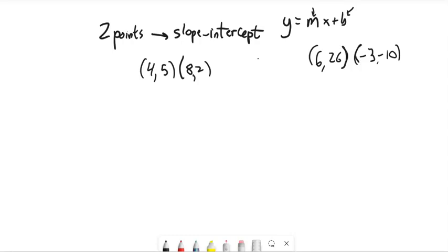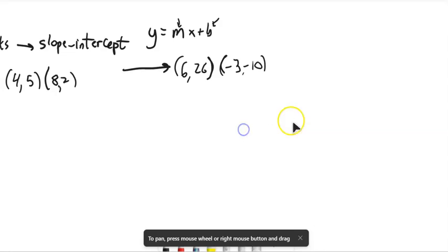So for these two points, I'll start with these two points right here, I'm going to need to know the slope, and then I'll figure out where the y-intercept is at. So the slope, as we know, is change in y over change in x. It's a ratio.